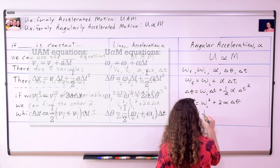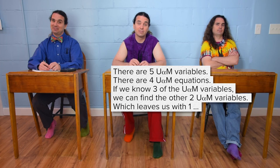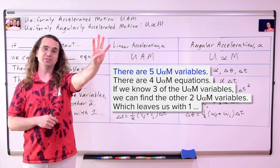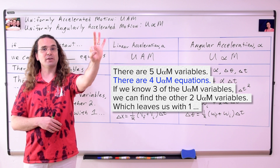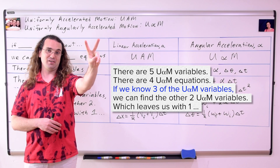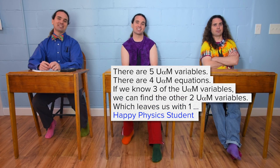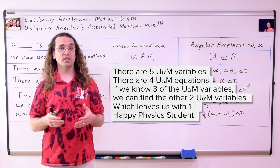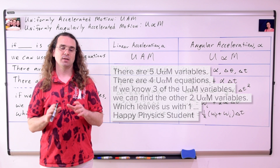Mr. P.: Which means, class, there are how many U-Fishy-M variables? Five! There are how many U-Fishy-M equations? Four! And if we know how many of the U-Fishy-M variables? Three! We can figure out the other two, which leaves us with one happy physics student! That is because the U-Fishy-M equations work just like the UAM equations.